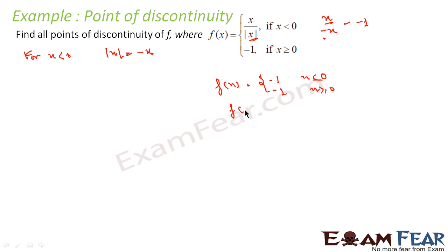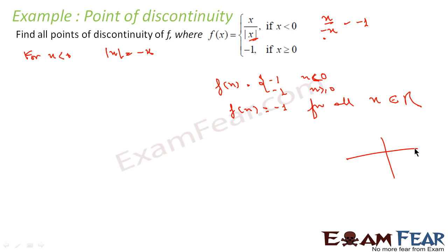So I can write f(x) is nothing but minus 1 only — because for x less than 0 it is minus 1, and for x greater than or equal to 0 it is also minus 1. So my function is simply f(x) equals minus 1 for all x, where x is a member of the real numbers. Since my function is a fixed value, I can say it is continuous — it is a polynomial function. If you draw this graph, the function is always minus 1, so it is a continuous function.